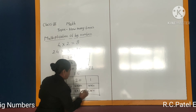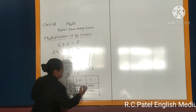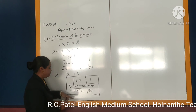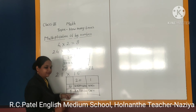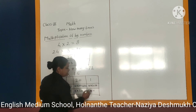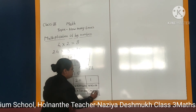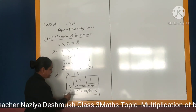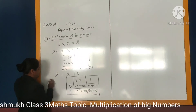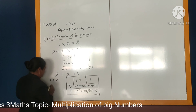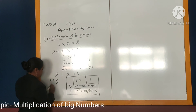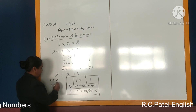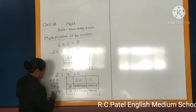What answer will we get? 10 multiplied by 20 means 200. 5 multiplied by 20 means 100. 10 multiplied by 1 means 10. 5 multiplied by 1 means 5. Now we will do the addition of all these numbers: 200 plus 100 plus 10 plus 5. So the answer we get is 315.